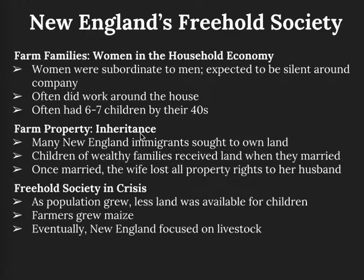Now let's look at farm property and inheritance. Men who migrated to the colonies escaped many traditional constraints, including the lack of land. Parents with small farms who could not provide their sons and daughters with land placed them as indentured servants. When indentures ended, some property-less sons climbed from laborer to tenant to freeholder. Children in successful farm families received a marriage portion when they were in their early 20s. Parents chose their children's partners because the family's prosperity depended on it. Brides relinquished ownership of their land and property to their husbands. Fathers had a cultural duty to provide inheritances for their children. The freehold society is going to be in crisis.